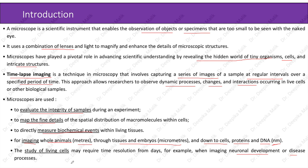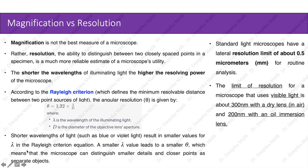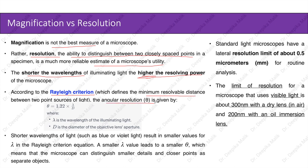Now let us understand the difference between magnification and resolution. Magnification is not the best measure of a microscope; rather, resolution — the ability to distinguish between two closely spaced points in a specimen — is a much more reliable estimate of a microscope's utility. The shorter the wavelength of illuminating light, the higher the resolving power of the microscope. According to the Rayleigh criterion, which defines the minimum resolvable distance between two point sources of light, the angular resolution denoted by theta is given by the following formula.